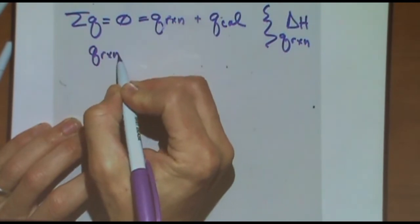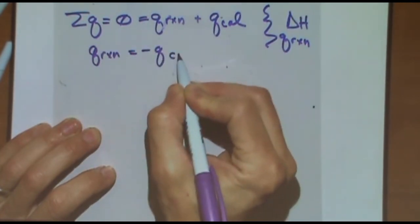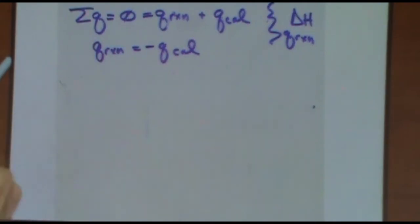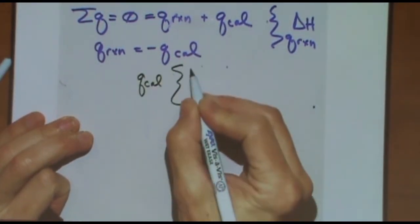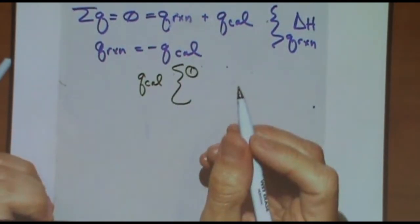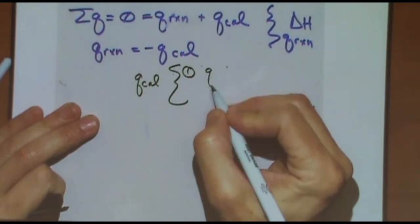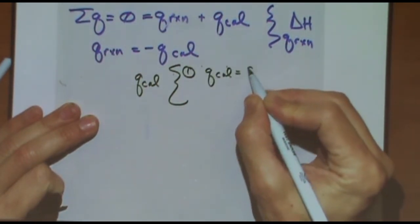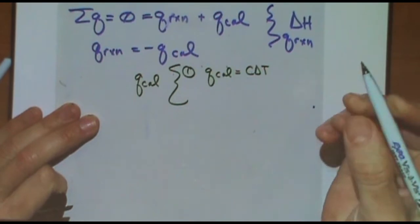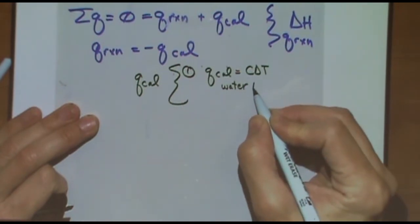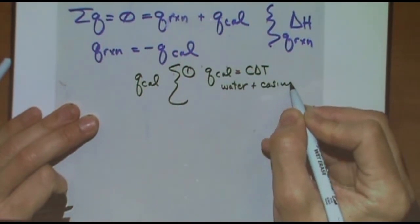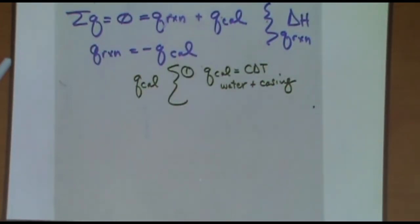So you're going to go Q reaction equals minus Q cal. For Q cal, there's three scenarios. So scenario one, this is the scenario of the video I posted before we covered this topic. Q cal is going to equal C delta T. I'd say this is the most common. This is a scenario when they say the water in the calorimeter plus the casing of the calorimeter are all one entity. It's all conflated together. Just the calorimeter as a whole. The casing, the stirrer, the water in it is all one entity.